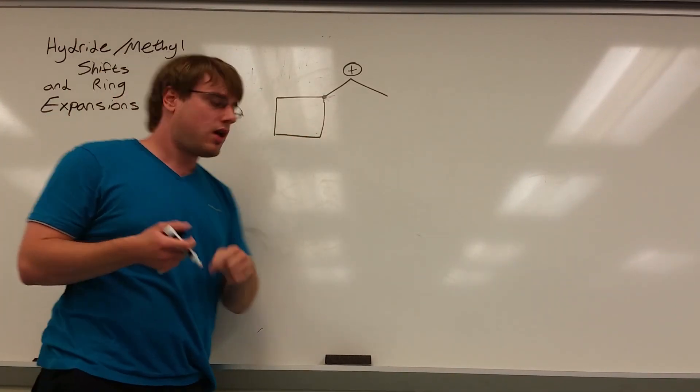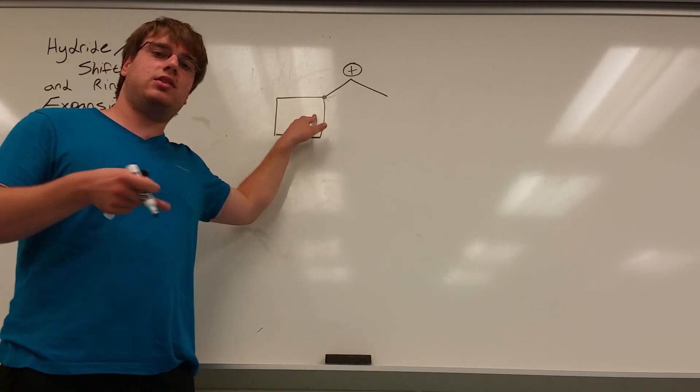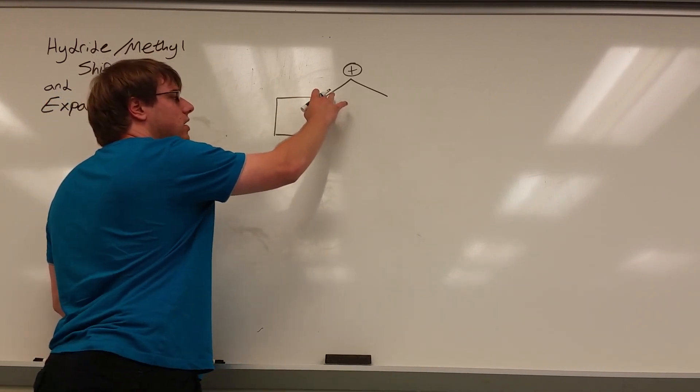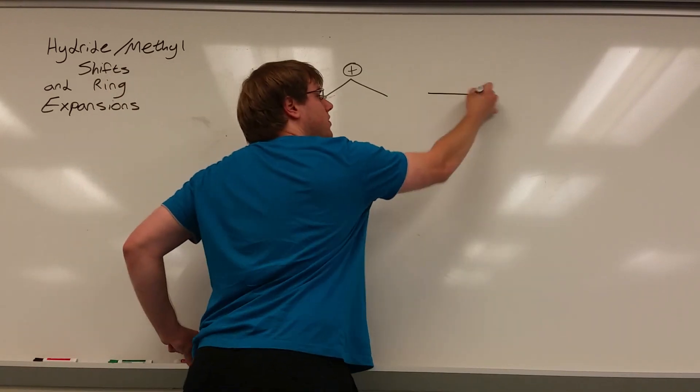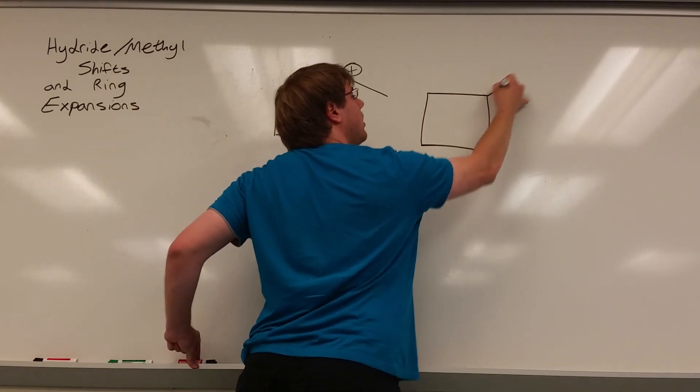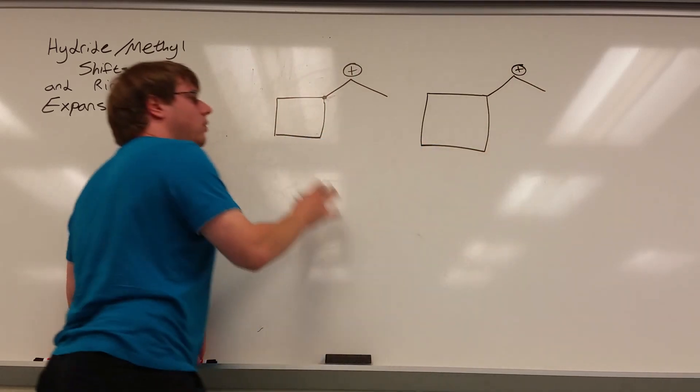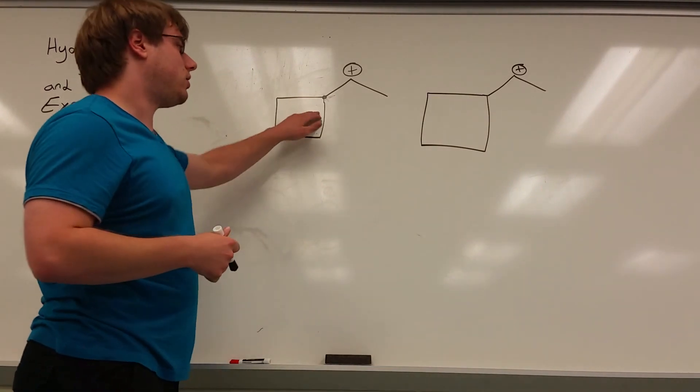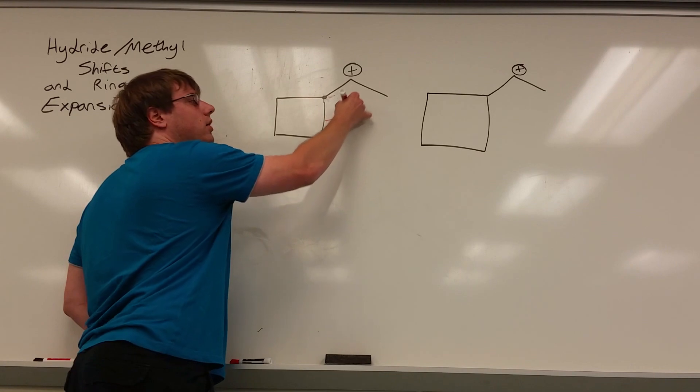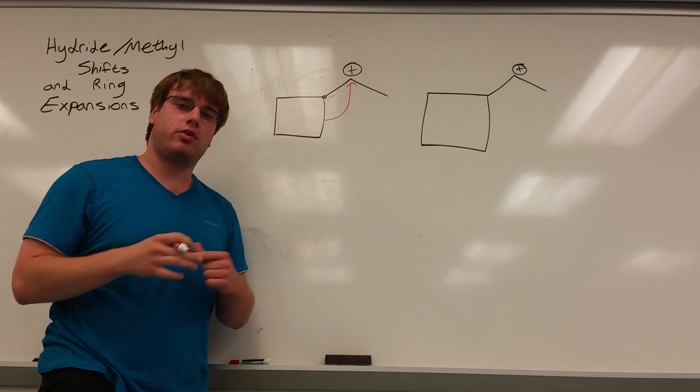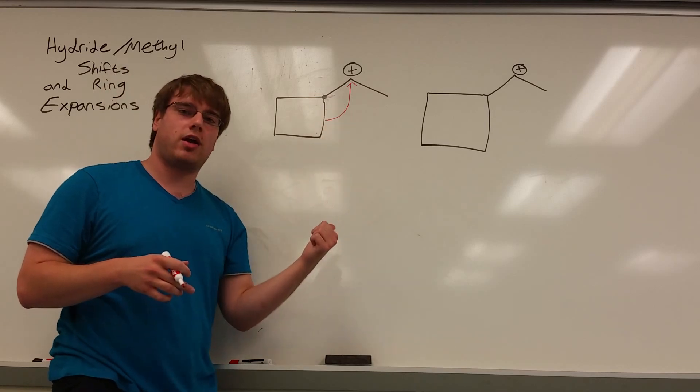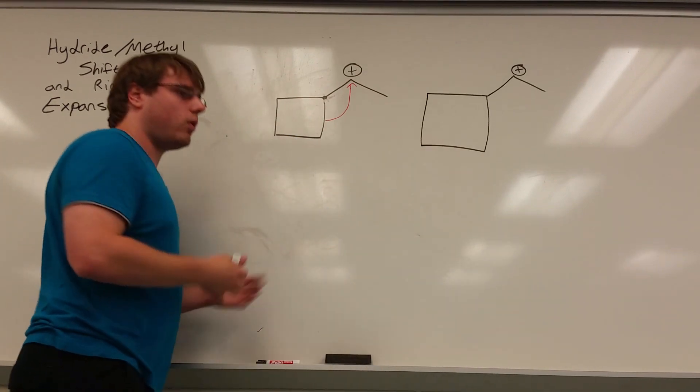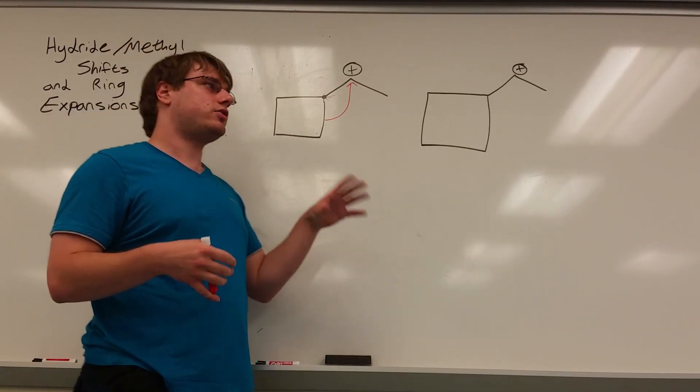Once you've picked your bond, what you're going to do is start your arrow from that bond and have it attack the carbocation, kind of like what we did with the methyl and hydride shifts, except this time it's the bond of a ring. In the thing that we drew exactly the same, we're going to figure out what we should look like after all these arrows have gone through.